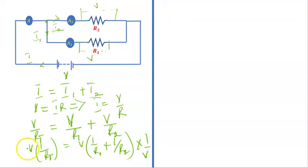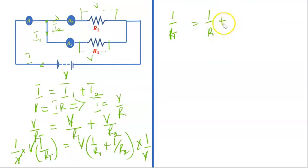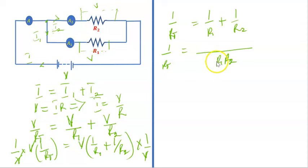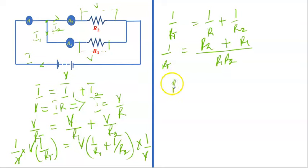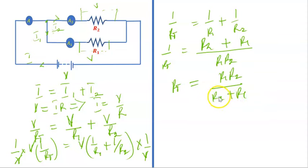Multiplying both sides by 1 over V, the V's cancel and we are left with 1 over RT equals 1 over R1 plus 1 over R2. Taking the LCM, 1 over RT equals R2 plus R1 all over R1 R2. Taking the inverse of both sides, RT equals R1 R2 over R1 plus R2. This is the basic formula for calculating the effective resistance for resistors in parallel — shown here for the two-resistor case.